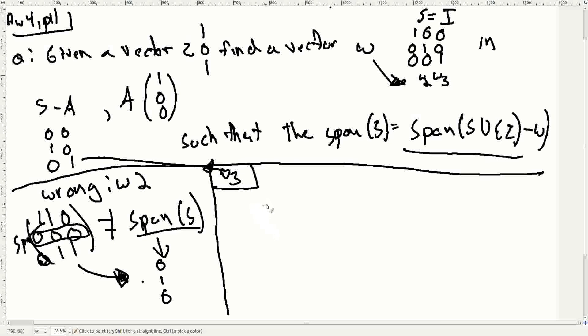So the way that you can do this is just by looking at s, which is just the identity matrix, times z. And that's going to give you back z. And now you say, well, how does that help me?